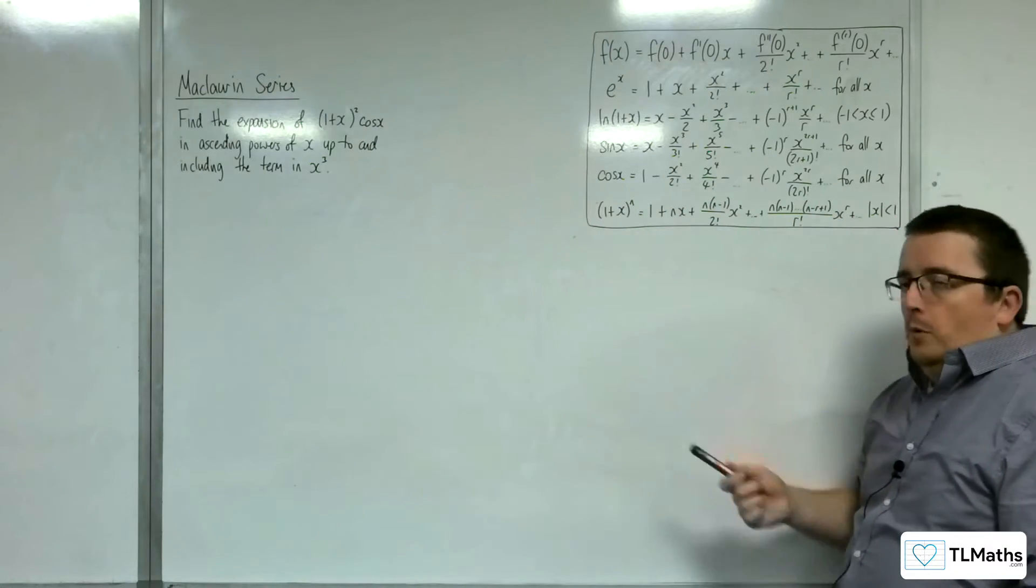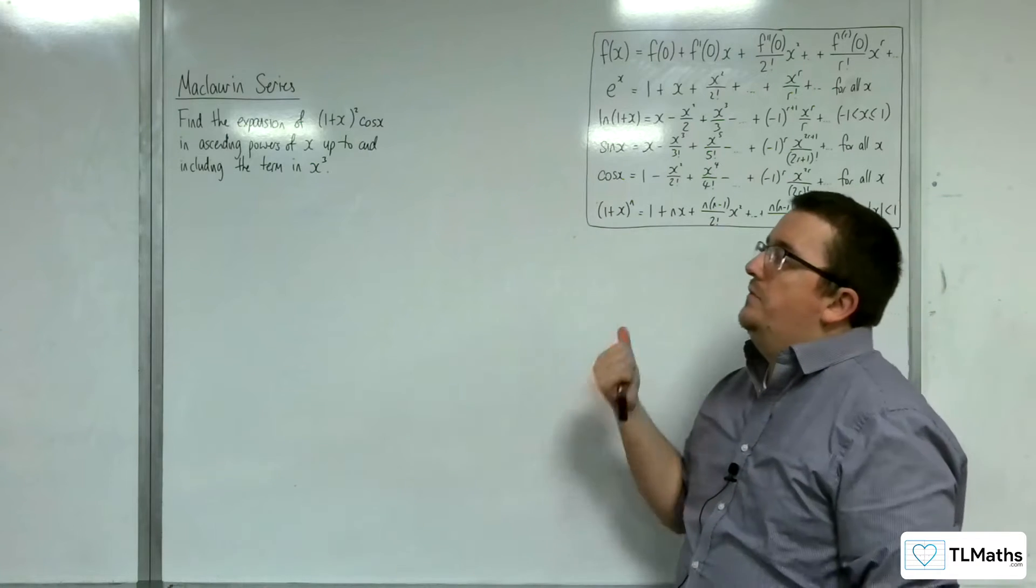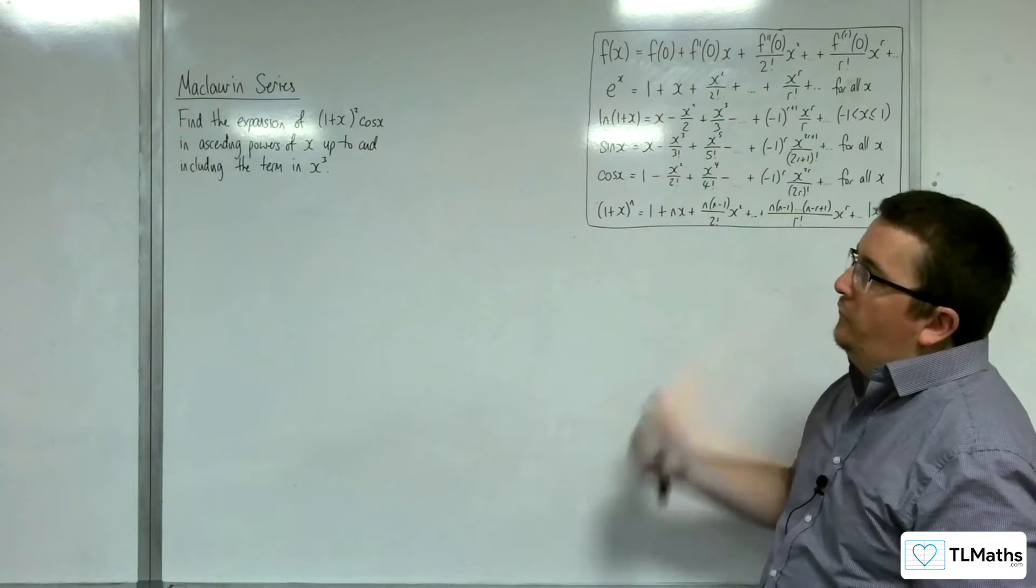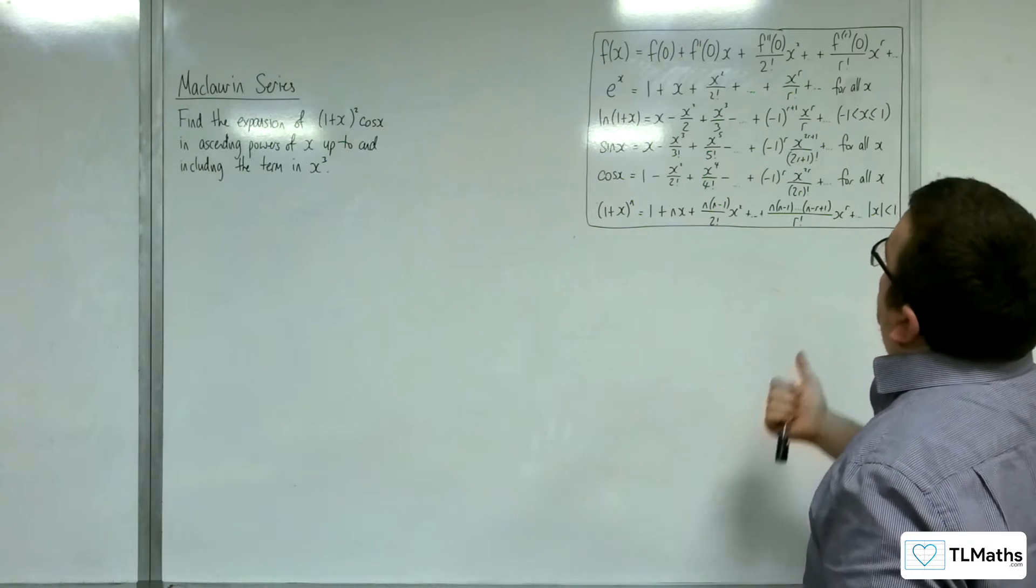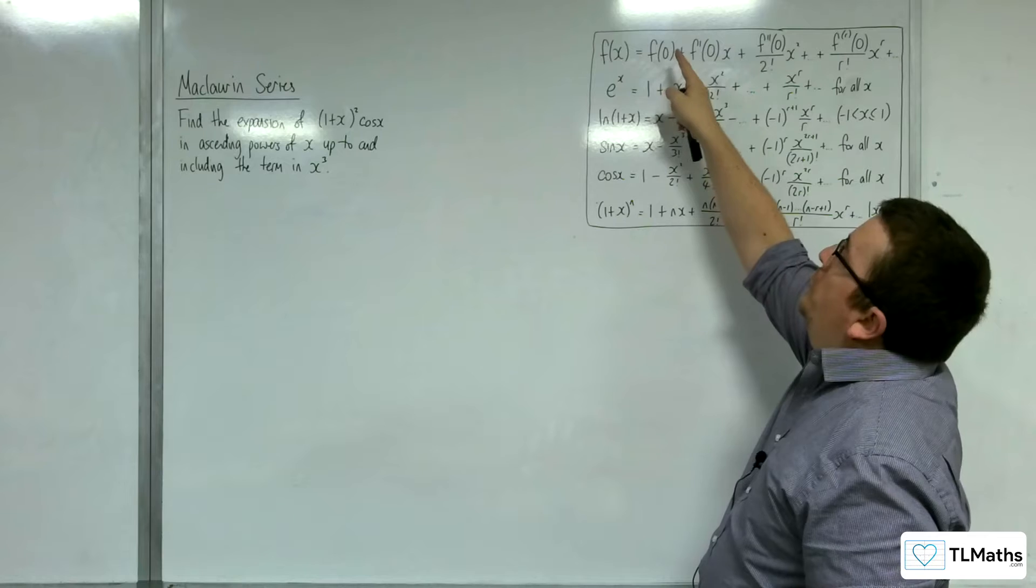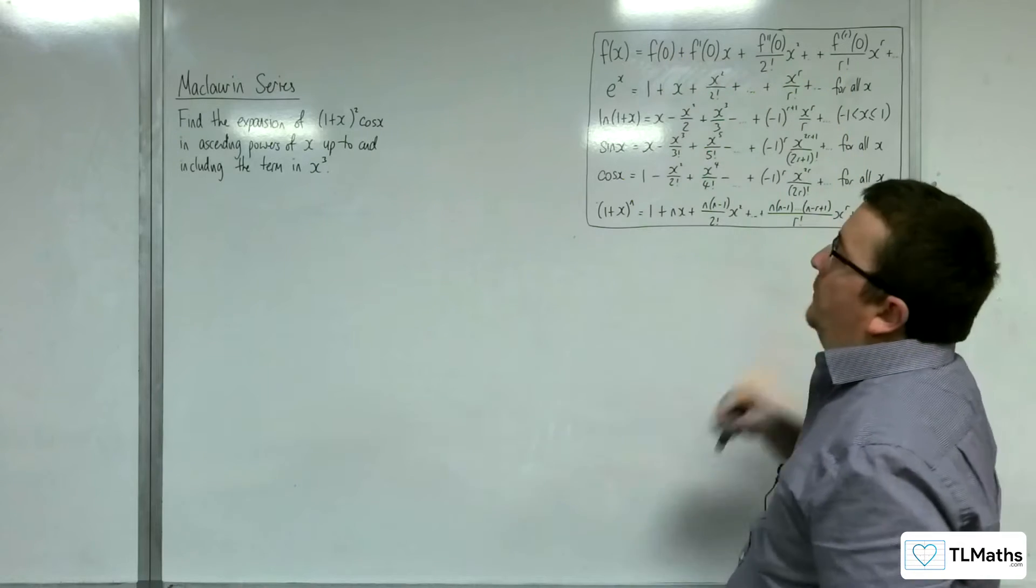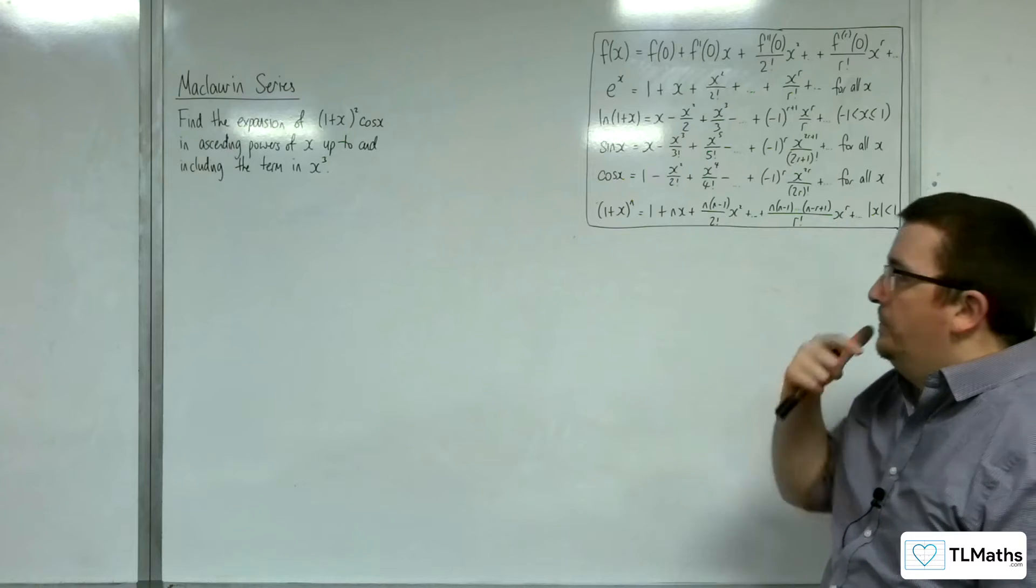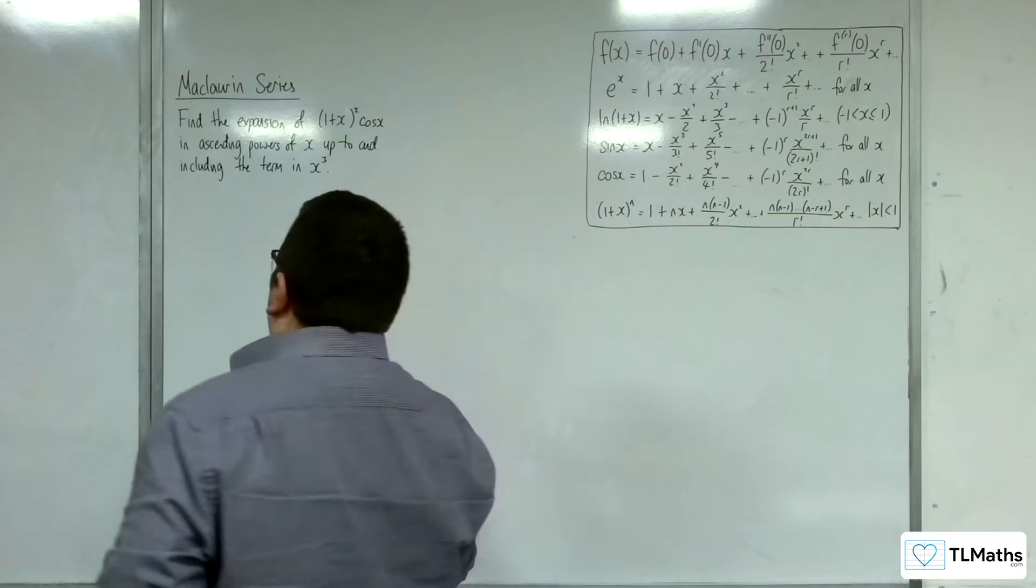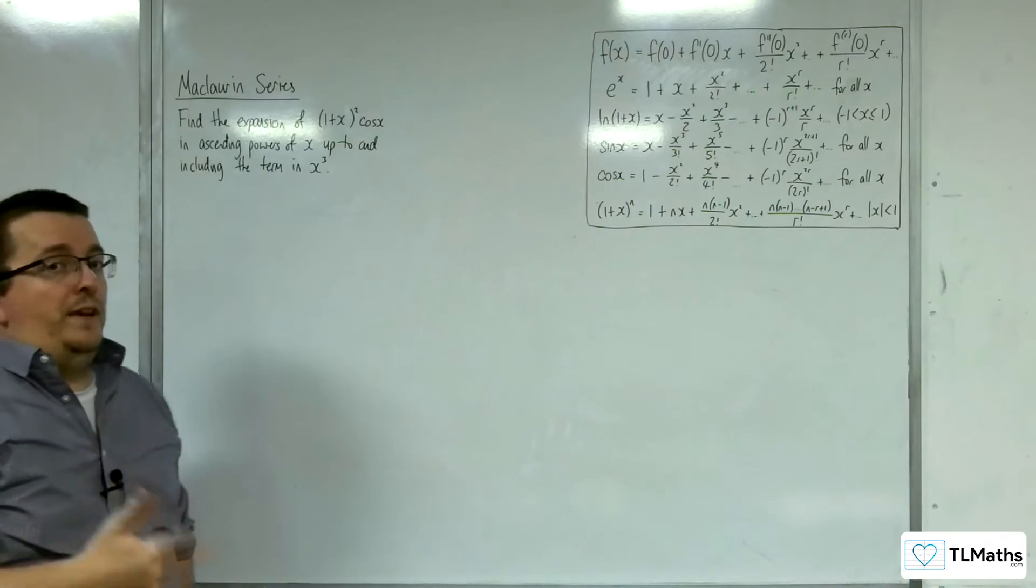Now, you've got two alternatives here. The first alternative is that you would need to differentiate this, and you would need to differentiate it three times in order to make sure you've got each of the coefficients for the terms you need up to x cubed. Now, you can do that. That's going to be product rule done several times.